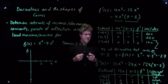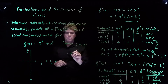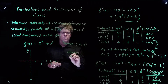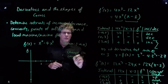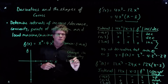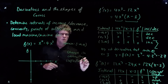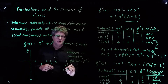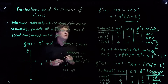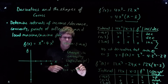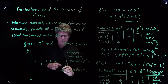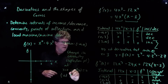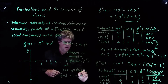We have a change in concavity at x equals 0 and x equals 2, and these are inflection points. At x equals 0, y equals f(0) equals 0. At x equals 2, y equals f(2).